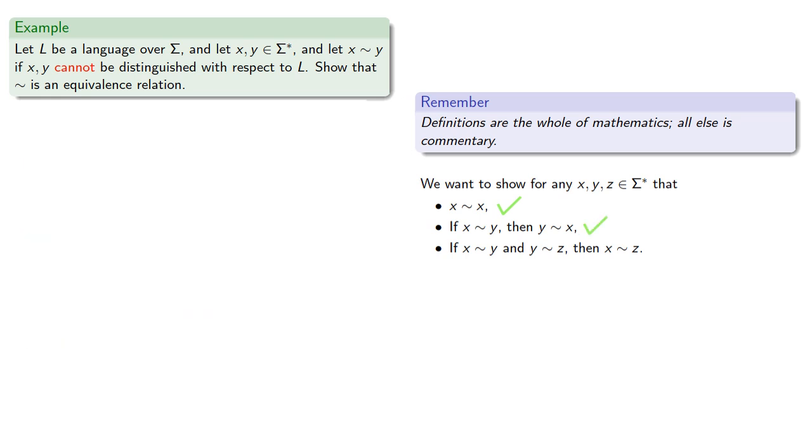Finally, let's check for transitivity. Remember, we can always assume the antecedent of a conditional, and in this case that antecedent is X squiggle Y and also Y squiggle Z. Again, definitions are the whole of mathematics, all else is commentary. In this case, squiggle means the two strings are indistinguishable. So for any string W, XW and YW are either both in L or neither is.